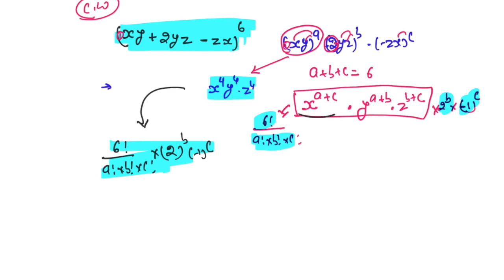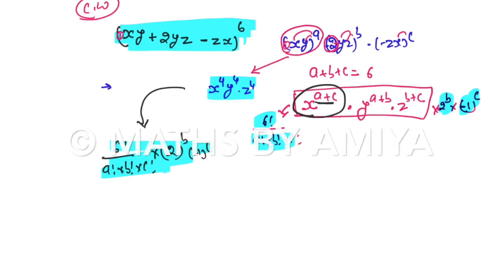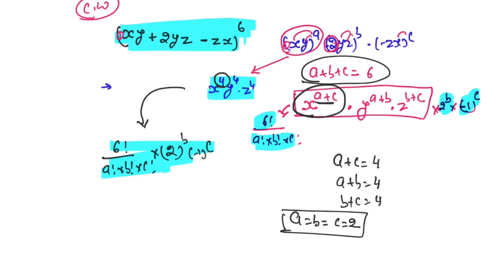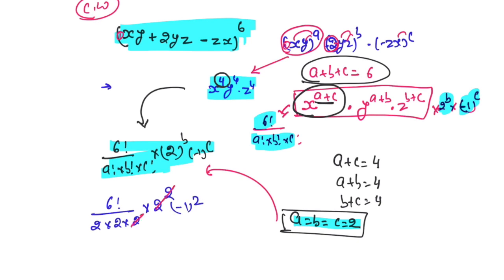Substituting a = b = c = 2 into the coefficient: 6! / (2! · 2! · 2!) × 2^2 × (−1)^2. This gives 720 / (2 · 2 · 2) × 4 × 1. The 2² from the coefficient cancels with one factor, giving 720 / 2 = 360. So the coefficient of x⁴y⁴z⁴ is 360.